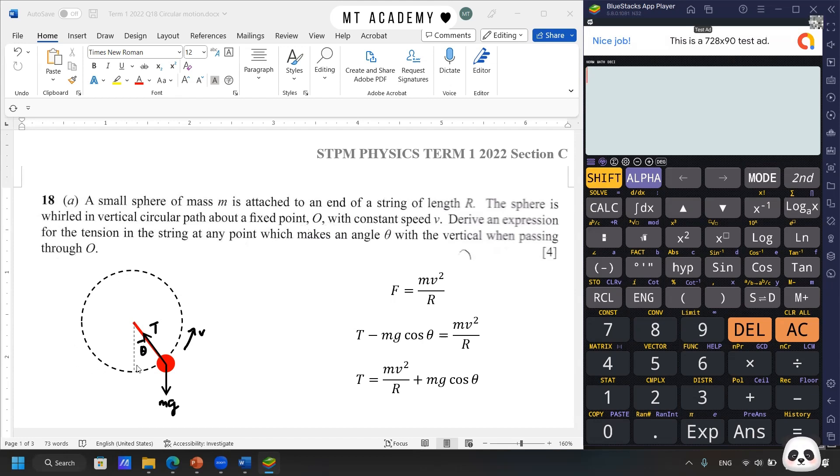Basically, here we take this diagram as a reference. Here we have a string that has the tension T, and also the weight, the mass. Let's say here is the sphere. So here we have the tension T, we have the weight. And that's all for the forces involved in this case. So let's say we have a velocity, linear speed moving in a counterclockwise.